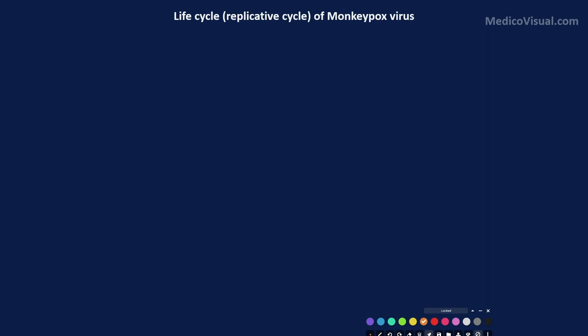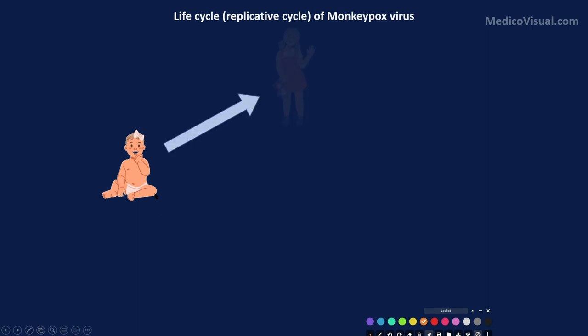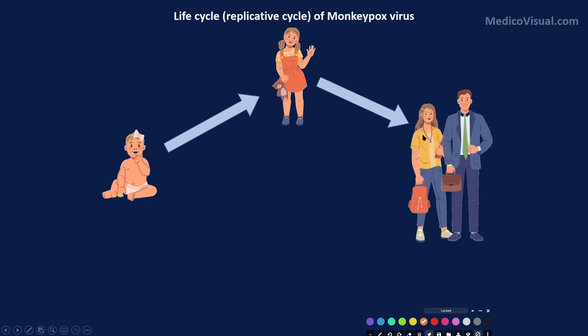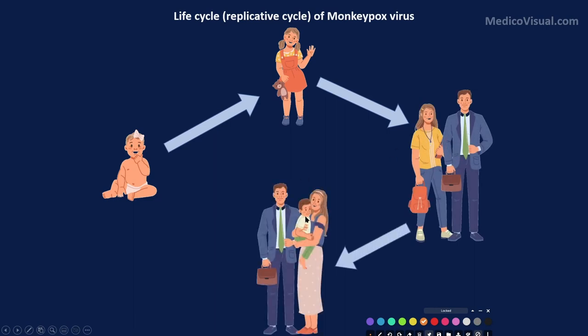Before discussing that, the question arises: what is the life cycle? I will explain it with a very simple example. Let's suppose here is a baby — a human baby, a female baby — and she grows and becomes a teenager and ultimately an adult. She marries someone, they have a baby, and that baby will again develop into a teenager and adult. This cycle continues — that is the life cycle, and it applies to any organism.